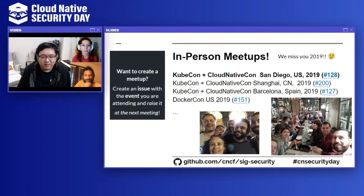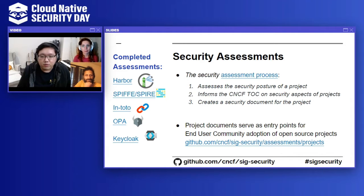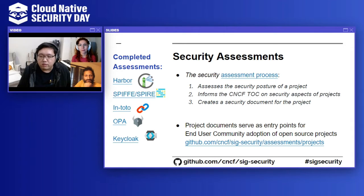Usually we have in-person meetups, and hopefully next year we'll start resuming once things get back to normal. Maybe the next KubeCon we'll see each other again. We also have security assessments — this is one of the core activities that we engage in. Today we have five security assessments already done. These security assessments are a way to really assess the security posture of a CNCF project.